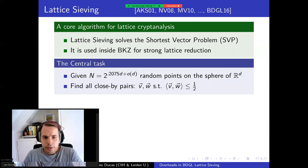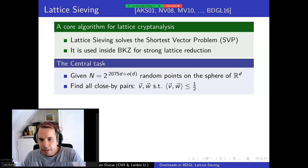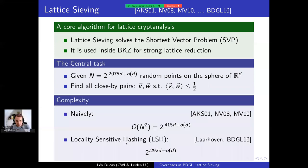The central task of this algorithm is given a very large and exponentially large list of points that we're going to model as being uniform on the sphere. The goal is to find all the close-by pairs in this list, namely finding all the vectors at angle less than 60 degrees or inner product less than one half. And doing so naively leads to a quadratic algorithm, but techniques that have been introduced and imported in cryptanalysis by Laarhoven allow us to decrease this quadratic complexity to something sub-quadratic. In particular, the BDGL algorithm, which is the fastest asymptotic algorithm, has this complexity 2^0.292d and then some sub-exponential factors.